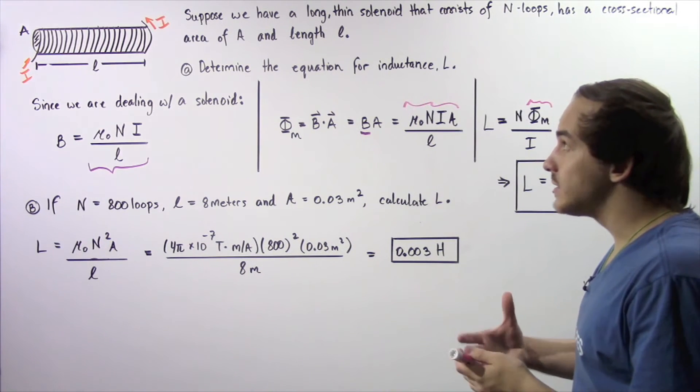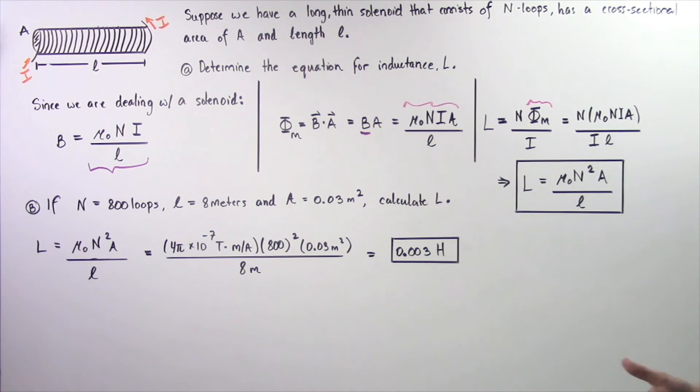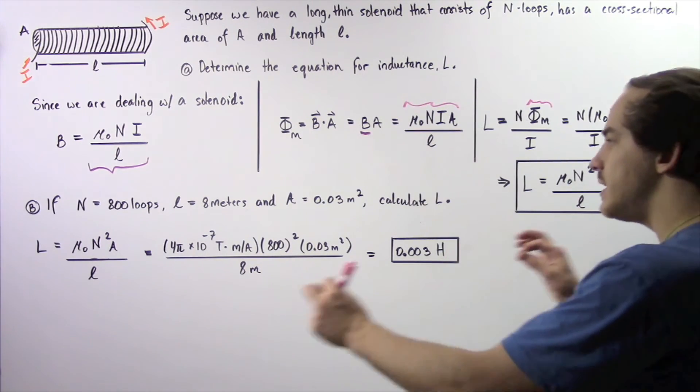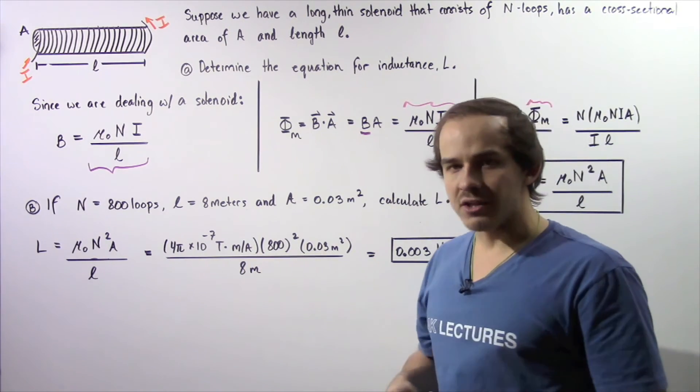So, the amount of inductance in our solenoid is equal to μ₀, the permeability of free space, multiplied by the square of N, the number of loops of wire, multiplied by A, the cross-sectional area of our solenoid, divided by L, the length of our solenoid. Now, let's move on to part B.